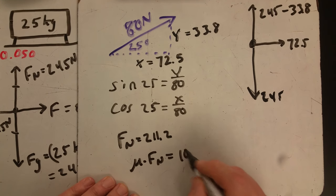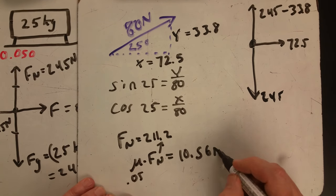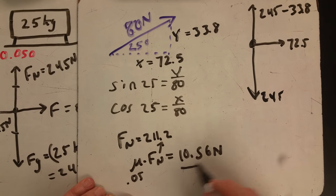There's our normal and our mu is still 0.05. 10.56 newtons is our new force of friction.